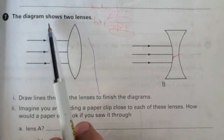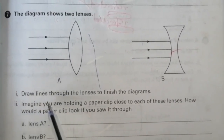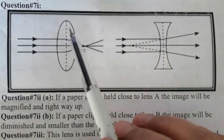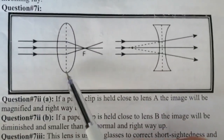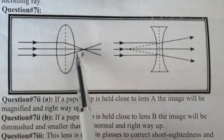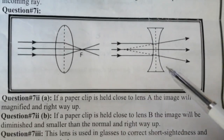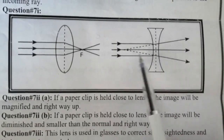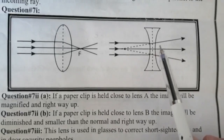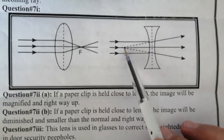Question number 7: the diagram shows two lenses — lens A and lens B. Part 1: draw lines through the lenses to finish the diagrams. Lens A is a convex lens, which is a converging lens. Rays parallel to the principal axis after refraction through the convex lens focus at a point called the focal point. Lens B is a concave lens. Light rays parallel to the principal axis after refraction through the concave lens diverge in different directions, and when we trace back these refracted rays, they meet at the focal point of the concave lens.